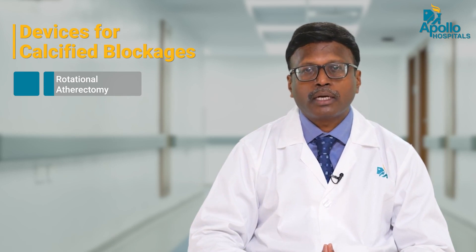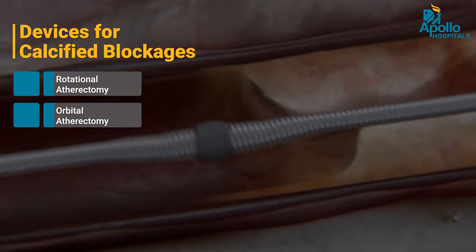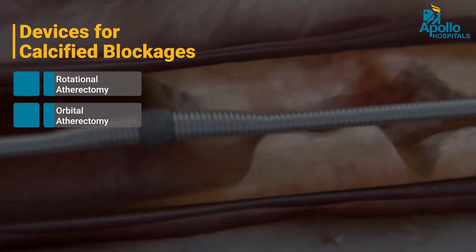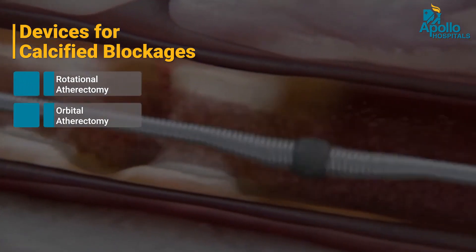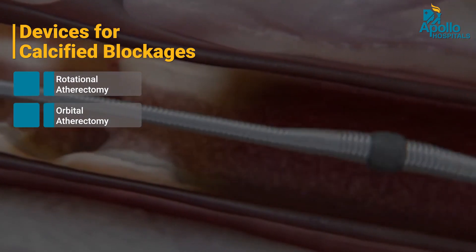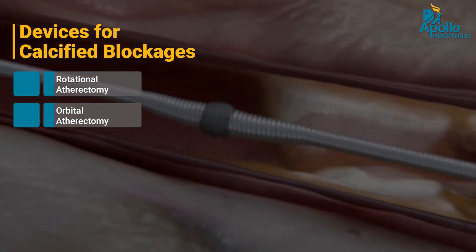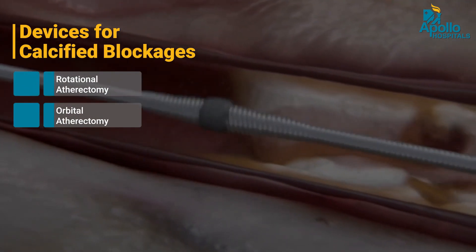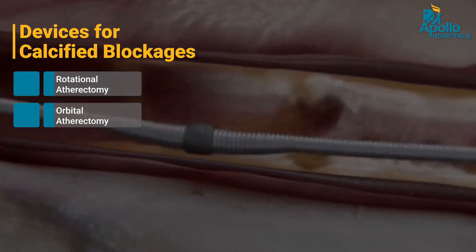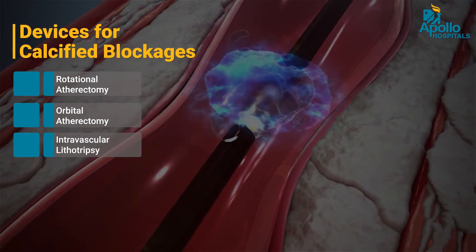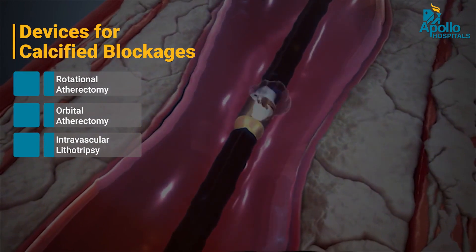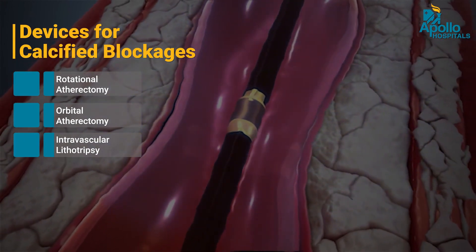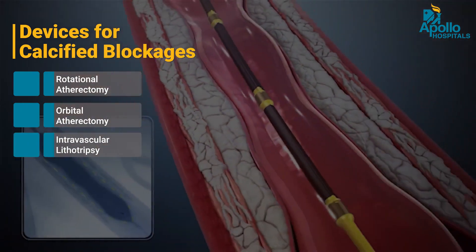Another device introduced in the last year is orbital atherectomy — an orbiting device. Just like the earth rotates on its axis and also around the sun, it has two rotations, going inside the blood vessel at 80,000 RPM. It cuts even deep calcium into small pieces. A third device is intravascular lithotripsy, which emits shock waves to break the calcium. These are the three important devices used nowadays for calcified blockages.